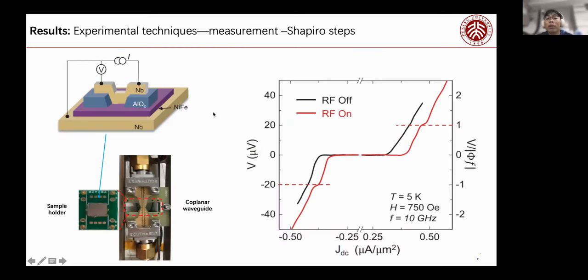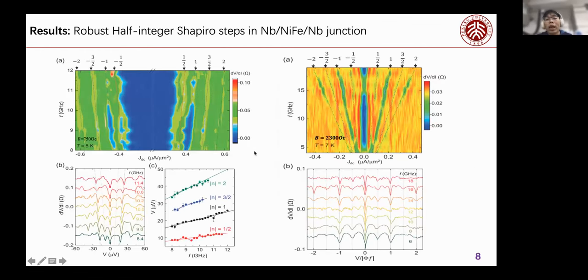About the measurements, first we do the voltage and current relation measurements without microwave, you can see the black line. There are no voltage steps. But after we add the microwave, we surprisingly found the Shapiro steps, and this is the integer step, like you can see from the red line. But after we change the temperature and the frequency, the half integer Shapiro steps appear.